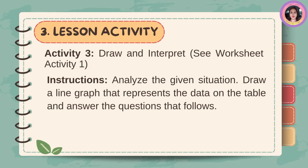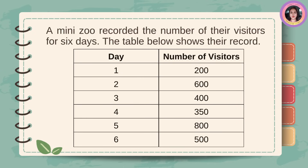Activity 3, Draw and Interpret. See worksheet activity number 1. Instructions: analyze the given situation, draw a line graph that represents the data on the table, and answer the questions that follow. A mini zoo recorded the number of their visitors for 6 days. Day 1: 200 visitors, Day 2: 600 visitors, Day 3: 400 visitors, Day 4: 350 visitors, Day 5: 800 visitors, Day 6: 500 visitors.